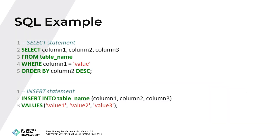Here is an example of an SQL script that retrieves data from a database. This script uses a SELECT statement to retrieve data from a table — selecting three columns from a table named table_name and filtering results by a specific value of column 1, then ordering results by column 2 in descending order. Here's another example using an INSERT statement, which adds new data into three columns of a table named table_name with specified values. Note that SQL syntax may vary from one database management system to another, but the basic concepts are the same.